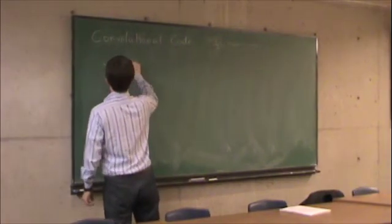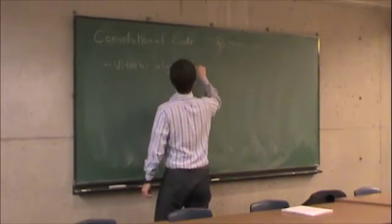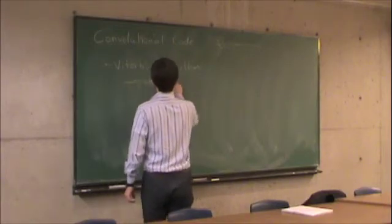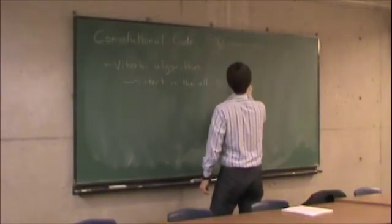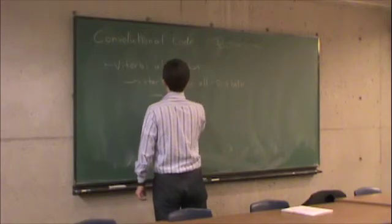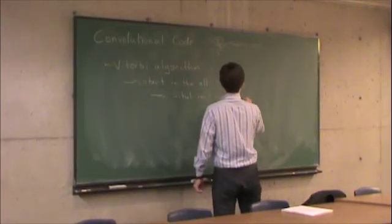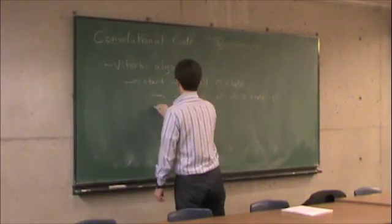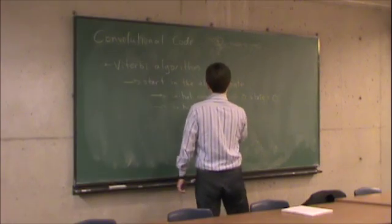So the Viterbi algorithm works like this. So start in the all zero state. What that means in practice is that the initial cost of the all zero state is zero, and the initial cost of all other states...